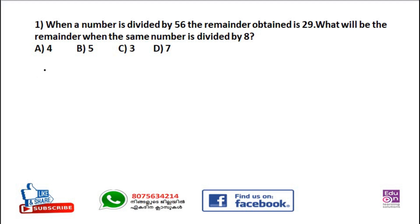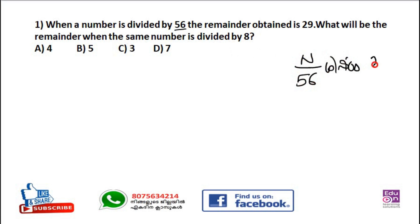A number is divided by 56 and the remainder obtained is 29. What will be the remainder when the same number is divided by 8? They will both divide by 26, and the number is dividing by 19.